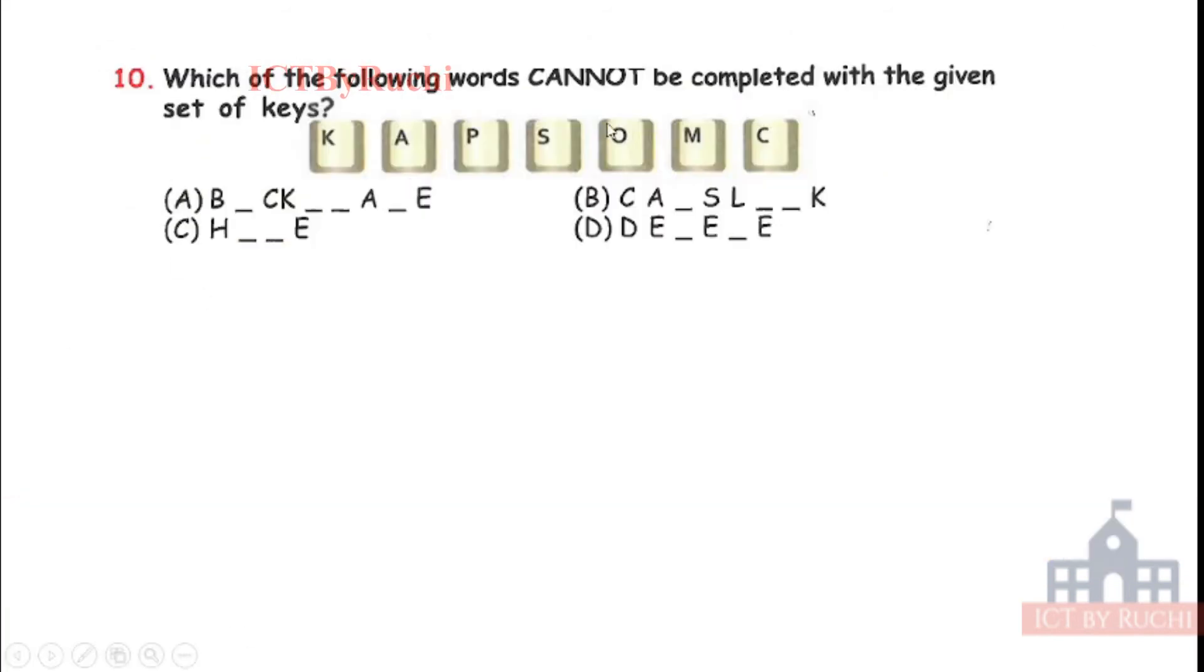Tenth. Which of the following words cannot be completed with the given set of keys? We have to see like K, A, P, S, O, M, C. Now we have to think there are computer terms like computer keys. We have backspace, caps lock, delete, and other keys. We have to think which cannot be completed. Tell me the answer. Answer is D. Because you can see D is delete and L and T is not present in the above keys.